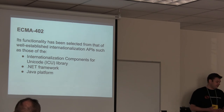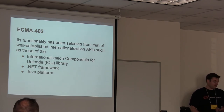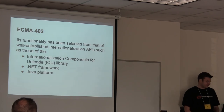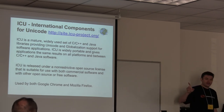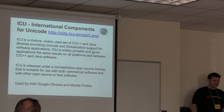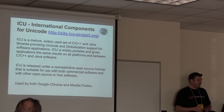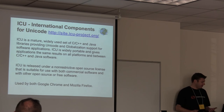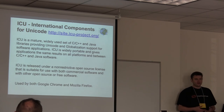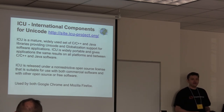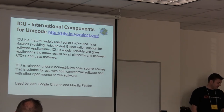The functionality for ECMA-402 was pulled from well-established APIs that already existed: the Internationalization Components for Unicode (ICU), which has been around a long time, the .NET framework, and the Java platform. Both Google Chrome and Mozilla Firefox use ICU under the covers — they pull in the C library bundles with all of the culture files. It's bundled into a bunch of software and has a non-restrictive license.